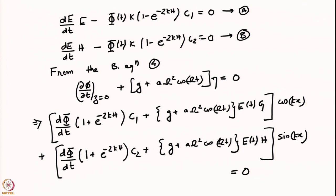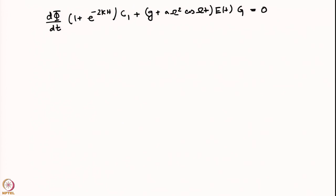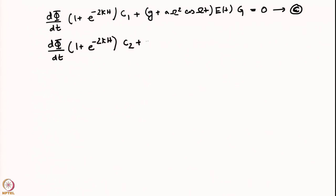So we have a total of four equations in four unknowns. By setting the coefficients of cos(kx) and sin(kx) to zero, we obtain equation C: d(phi)/dt times (1 + e^(-2kh)) times C1 plus g equals zero. A similar equation for C2 and h gives equation D, with exactly the same coefficients.